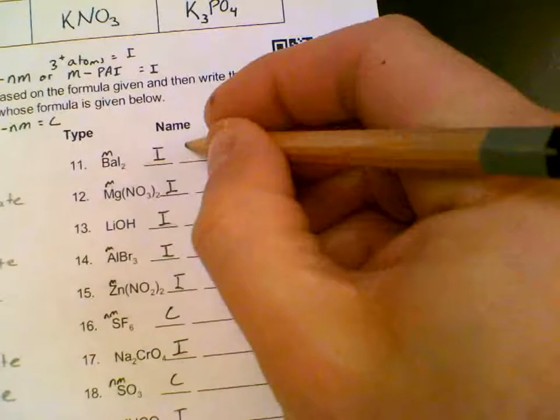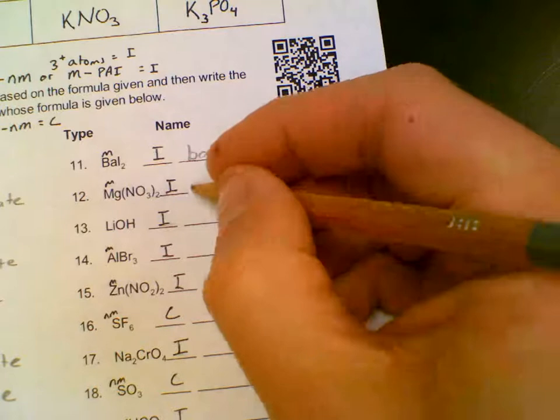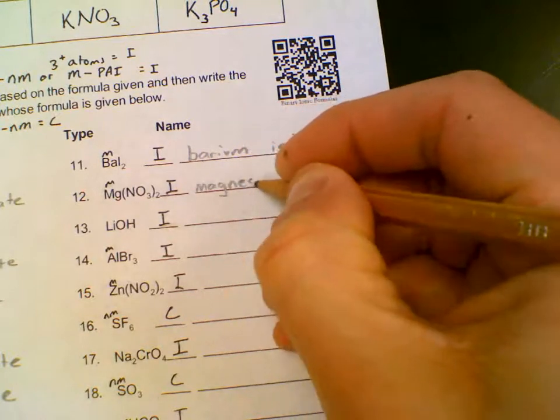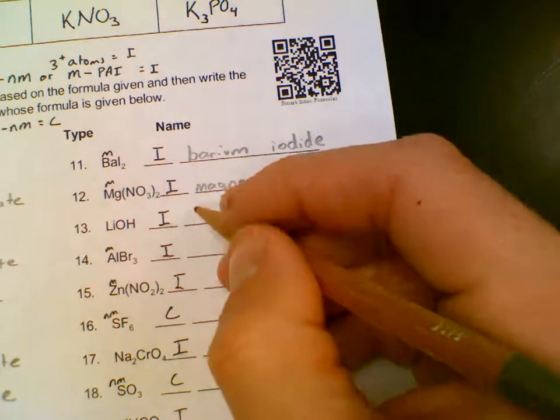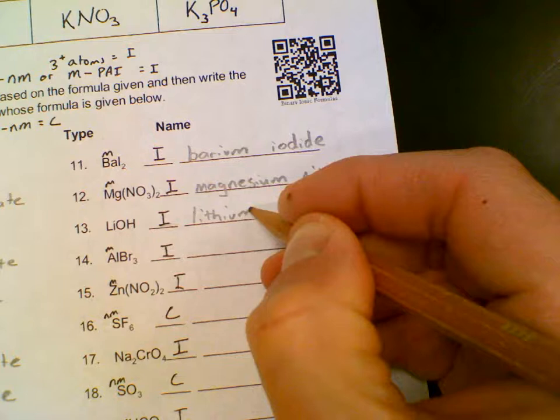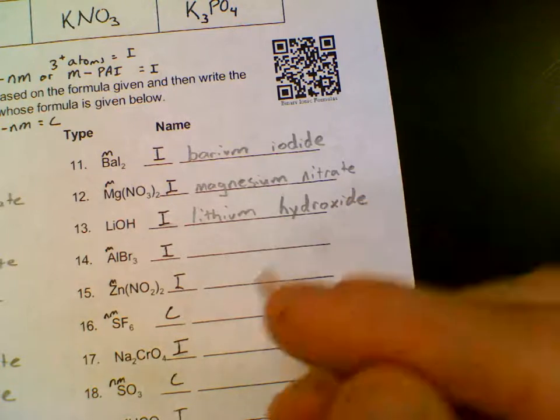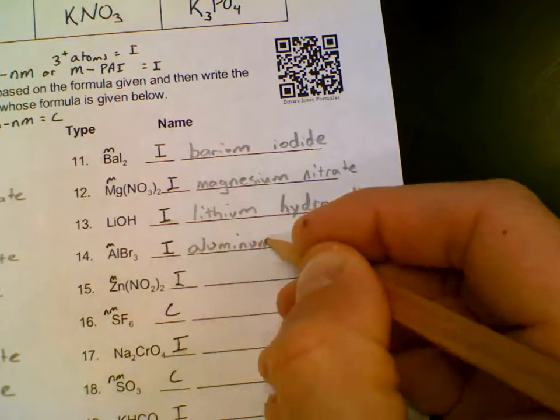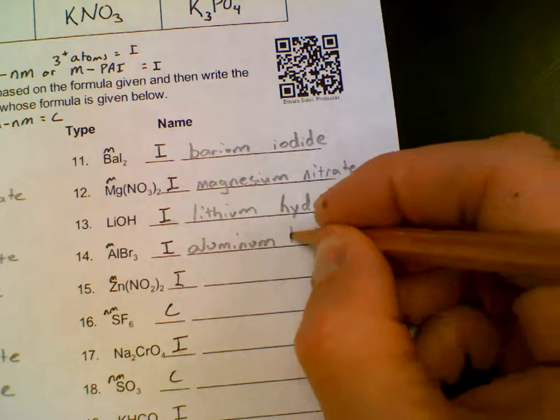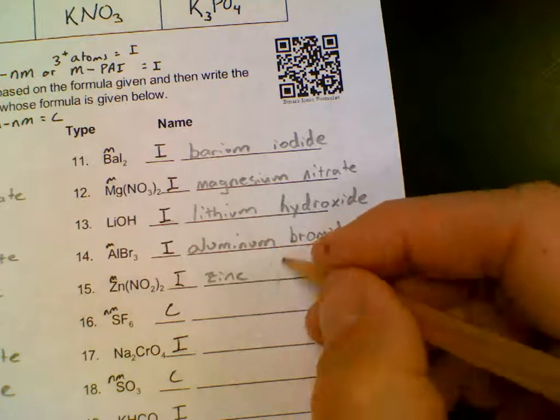Skip the last two covalent for right now. Ba, full name, barium. I gets the anion style name, iodide. Mg, full name, magnesium. NO3 is called nitrate. Li, lithium. OH is called hydroxide. Al is aluminum. Br would be bromide. Zn gets the full name, zinc. NO2 is called nitrite.